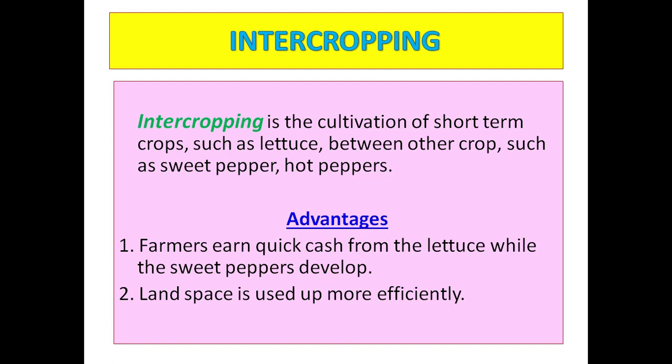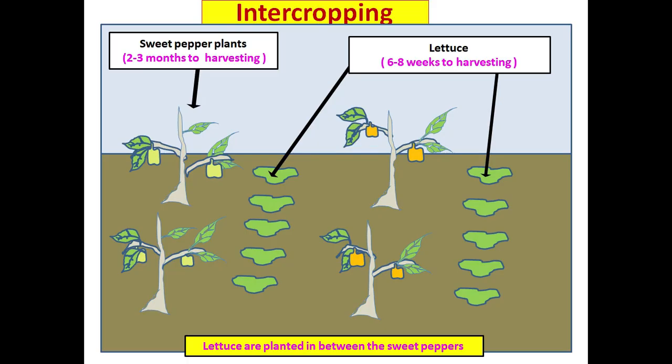Intercropping is also a form of multiple cropping but with a specific principle. Intercropping is the cultivation of short-term crops such as lettuce between other crops such as sweet peppers or hot peppers. Advantages: number one, farmers earn quick cash from the lettuce while the sweet peppers are developing; number two, plant spaces are used up more efficiently.